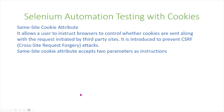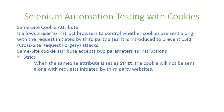There's another thing called the SameSite cookie attribute, which allows a user to instruct browsers to control whether cookies are sent along with a request initiated by third-party websites. It is introduced to prevent cross-site request forgery attacks. The SameSite cookie attribute accepts two parameters as instructions — the first is strict, meaning the cookie will not be sent along with requests initiated by third-party websites.